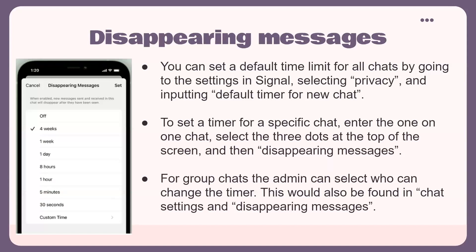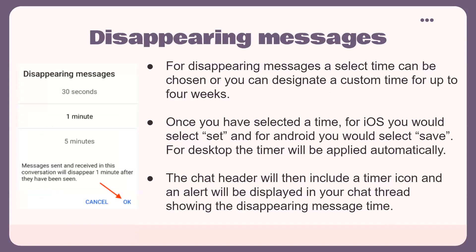For group chats, the admin can select who can change the timer, found in chat settings under Disappearing Messages. You have multiple time options: 30 seconds, 5 minutes, 1 hour, 8 hours, 1 day, 1 week, up to 4 weeks, or a custom time. Once you have selected a time, for iOS select 'Set' and for Android select 'Save.' For desktop, the timer will be applied automatically. The chat header will then include a timer icon and an alert will be displayed in your chat thread showing the disappearing message time.